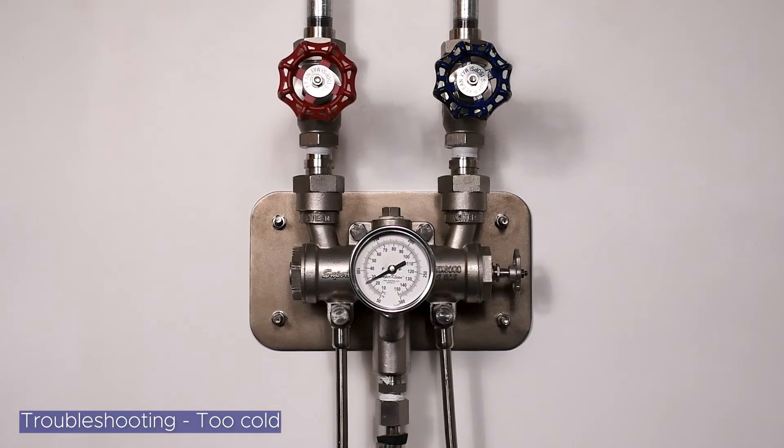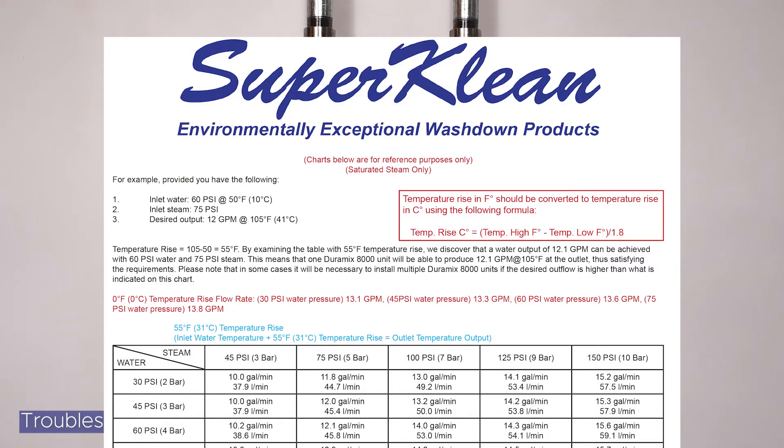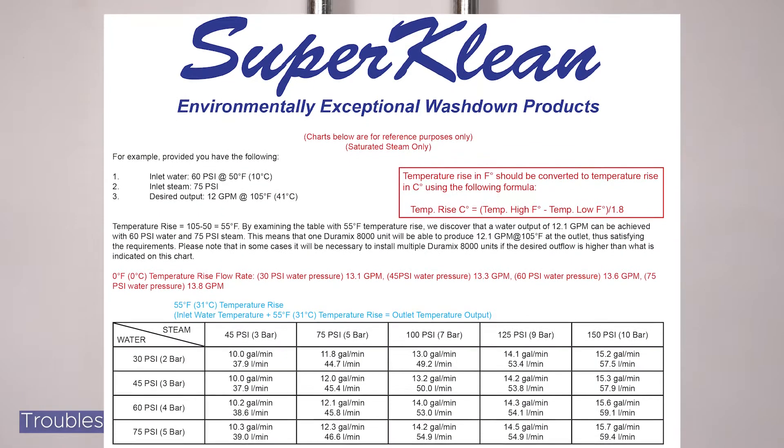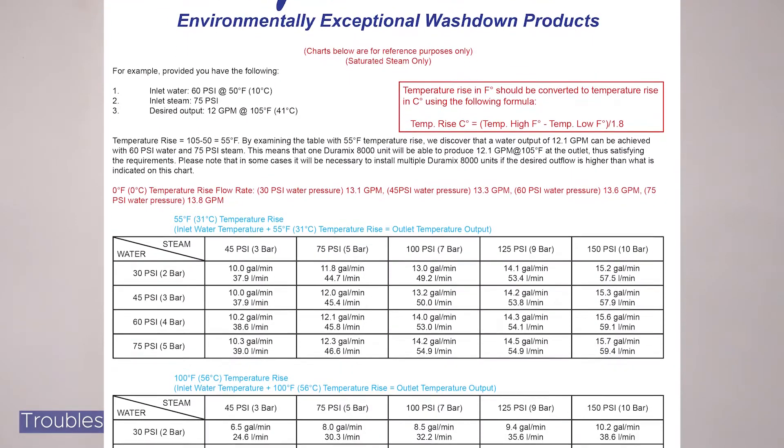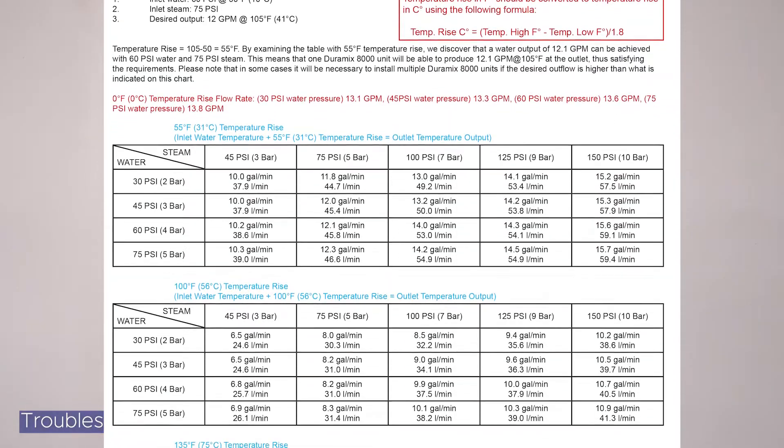Adjusting the cold water globe valve can affect the water output. Low water output could be due to low steam pressure in your factory relative to the cold water pressure. To get a rough idea of your flow rate at a certain temperature, please refer to the temperature rise versus flow rate output chart.